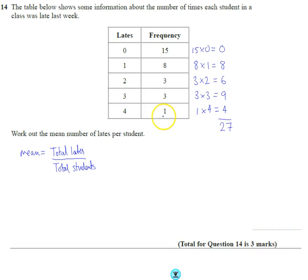And then this here is the frequency. This is actually the number of students. So here we've got fifteen, eight, twenty-three, twenty-six, twenty-nine, thirty. There are thirty students.